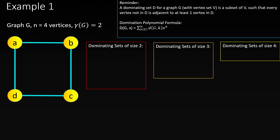Let's see three examples of domination polynomials, starting with graph G. Since G has four vertices and domination number two, we'll be searching for the number of dominating sets of sizes two through four. There are six dominating sets of size two in this graph: AB, AC, AD, BC, BD, and CD. That means the coefficient on the degree-two term in our domination polynomial will be six.